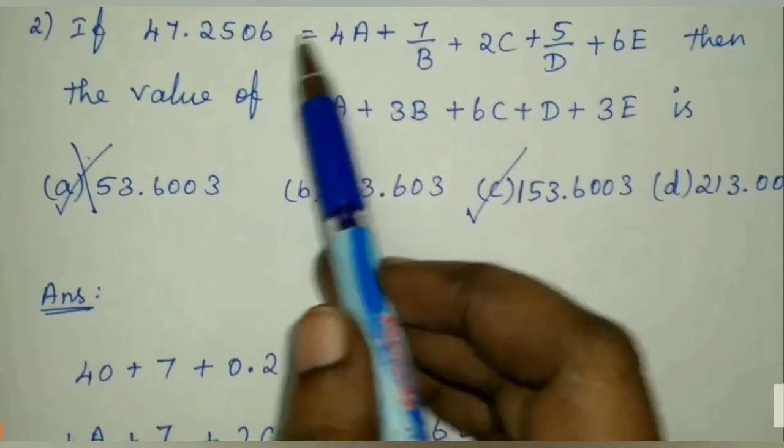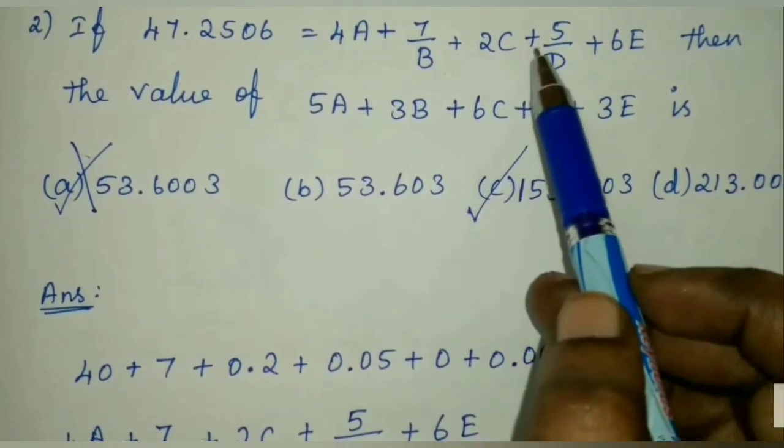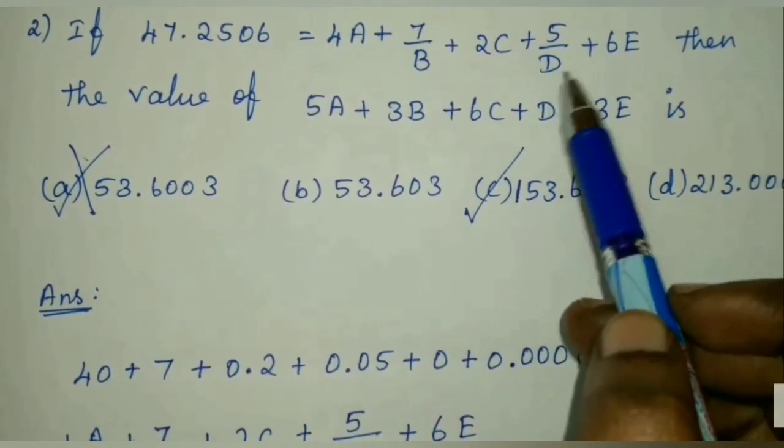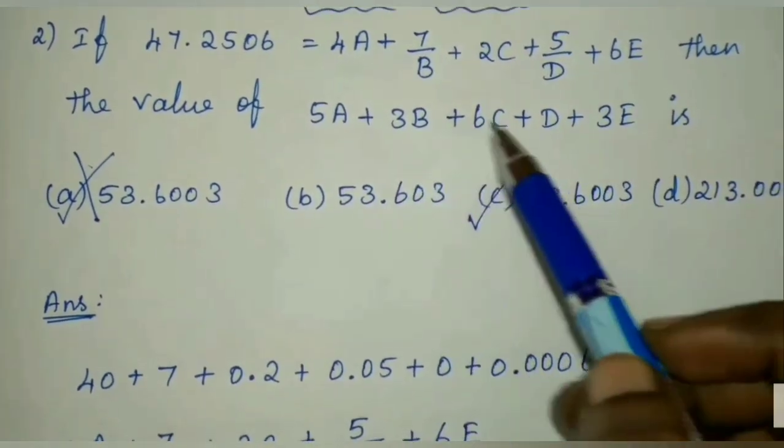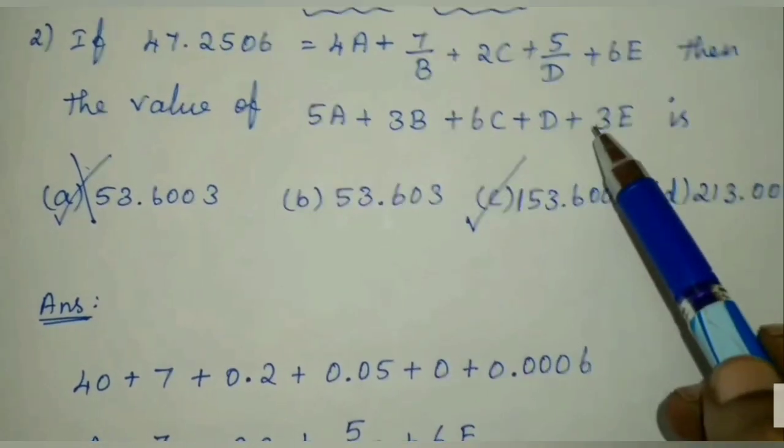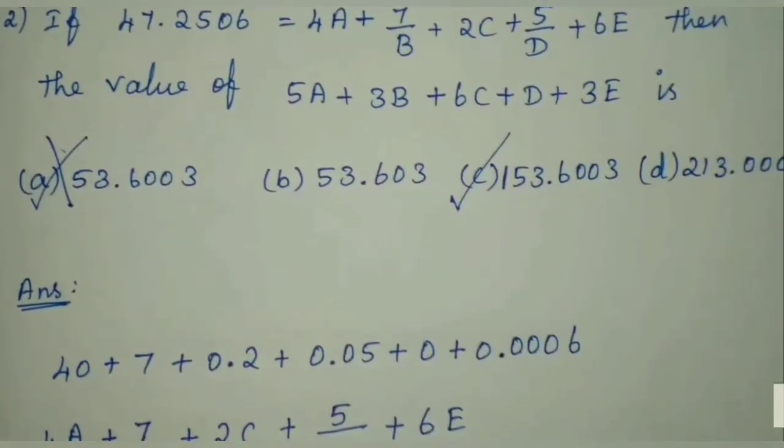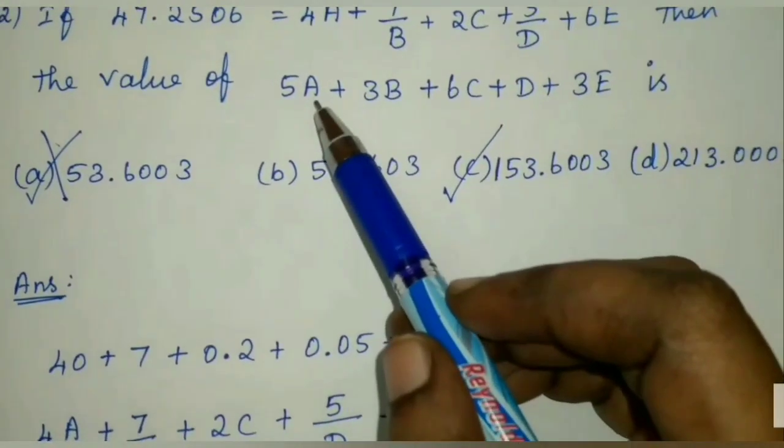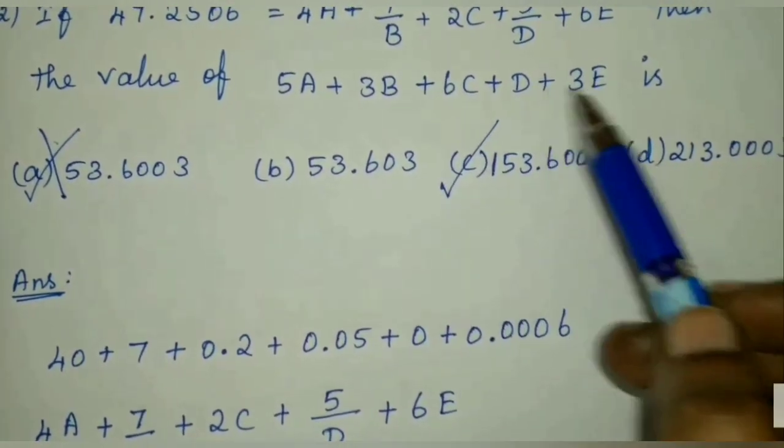If 47.2506 equals 4A plus 7 by B plus 2C plus 5 by D plus 6E, then find the value of 5A plus 3B plus 6C plus D plus 3E. So we have to find out the value of A, B, C, D, E, then substitute the values to get the answer.